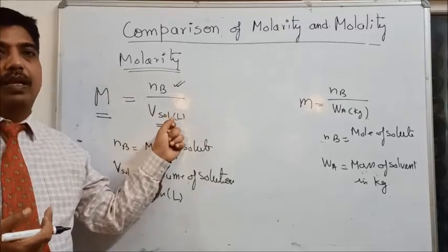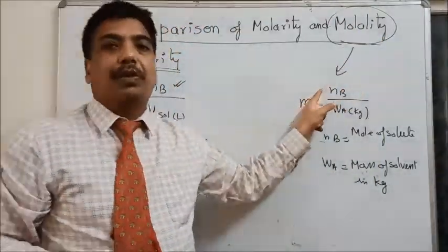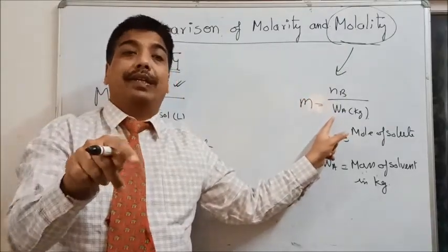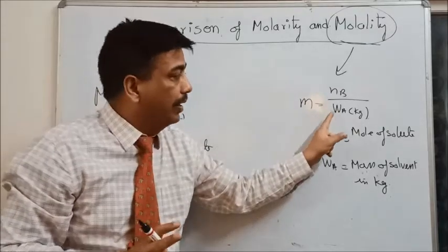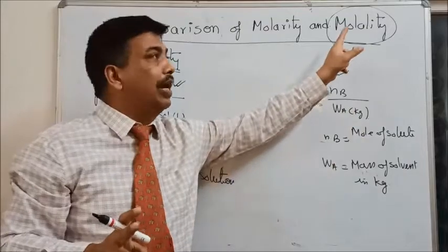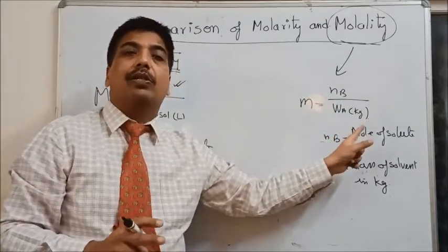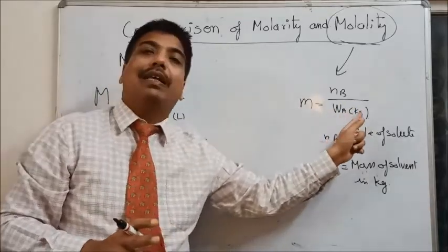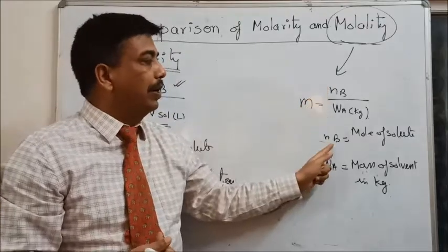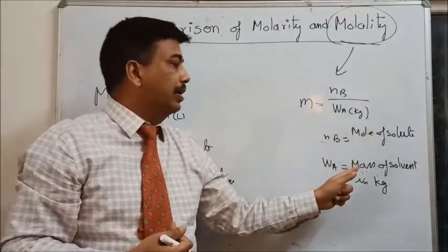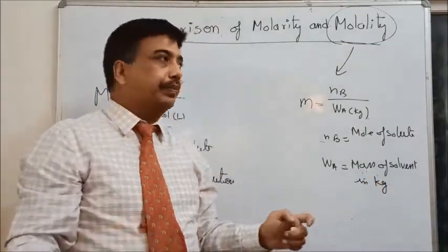Molality (M-O-L-A-L-I-T-Y) is the number of moles of solute dissolved in 1 kg of solvent. Note that we are talking about solvent only, not the full solution. In molality, mass is used instead of volume: nB divided by mass of solvent in kilograms. If the mass is given in grams, convert to kilograms by dividing by 1000. Here wA is the mass of solvent in kilograms.